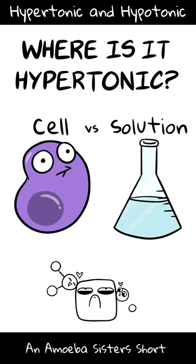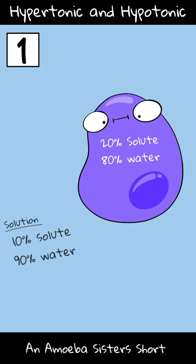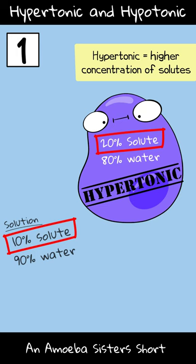In diagram 1, it is the cell that is hypertonic, as it would have a higher solute concentration. That solution in this case is hypotonic. A net movement of water would move into the cell — it would swell.